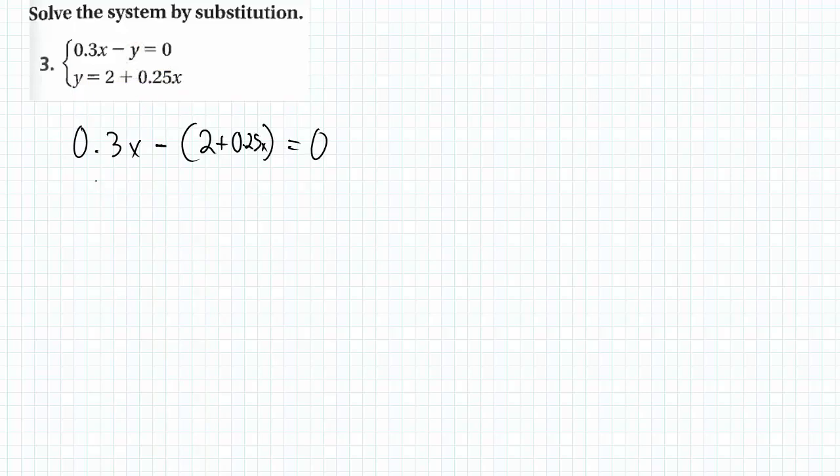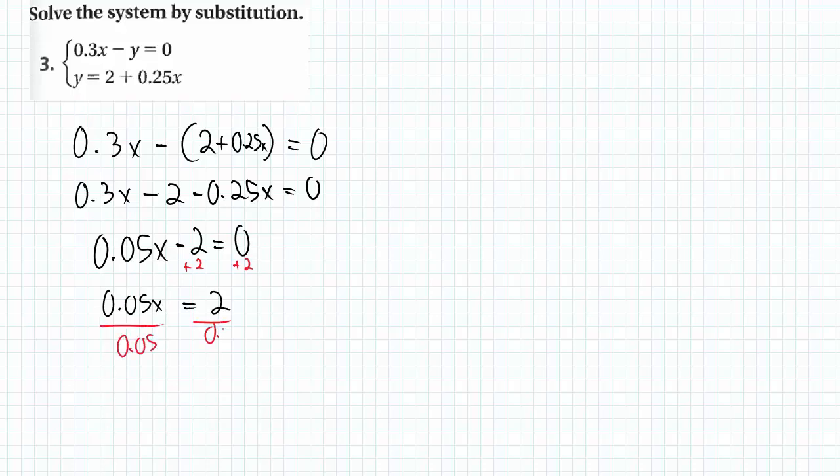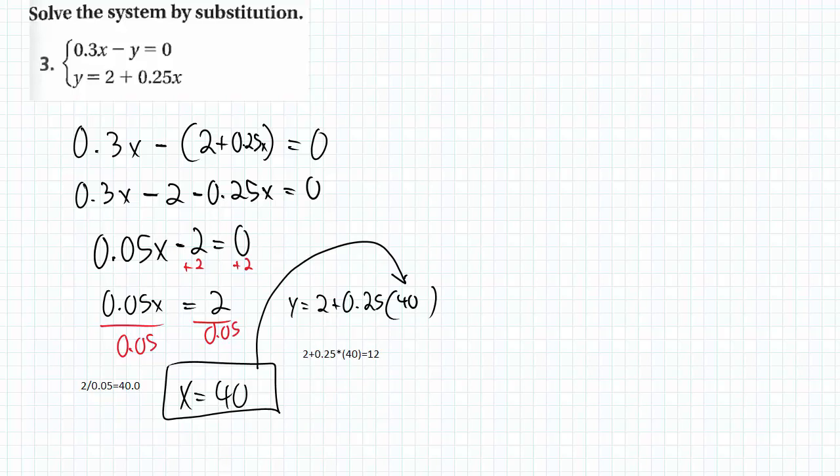This one right here, if I solve using substitution, one of the equations is already solved for y. So I take that value of y and plug it into the y of the first equation. Remember to distribute the negative. So I'm going to get the x by itself, divide 2 by 5 hundredths, and I get 40. Since x equals 40, I can take that and plug it into either of the y's of either equation. I choose to plug it into the second equation.